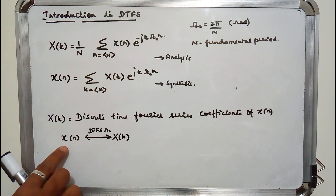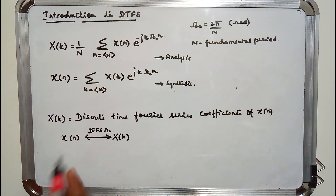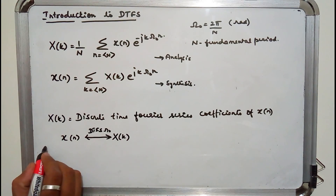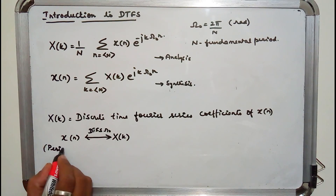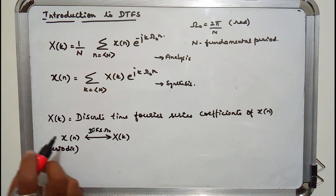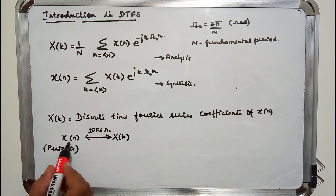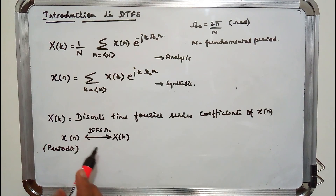From this explanation it is clear that the input has to be discrete — x of n — which is a discrete signal, and it has to be periodic. For a non-periodic discrete signal we have the Discrete Time Fourier Transform, but for a discrete time periodic signal we have the Fourier series representation, that is DTFS.